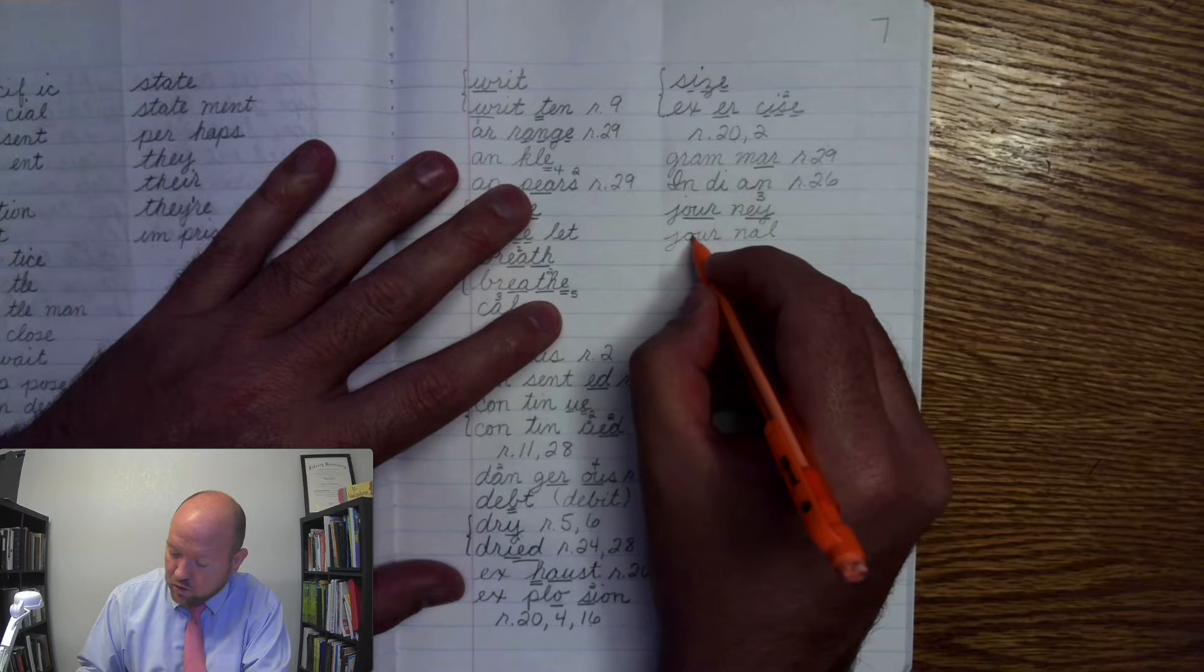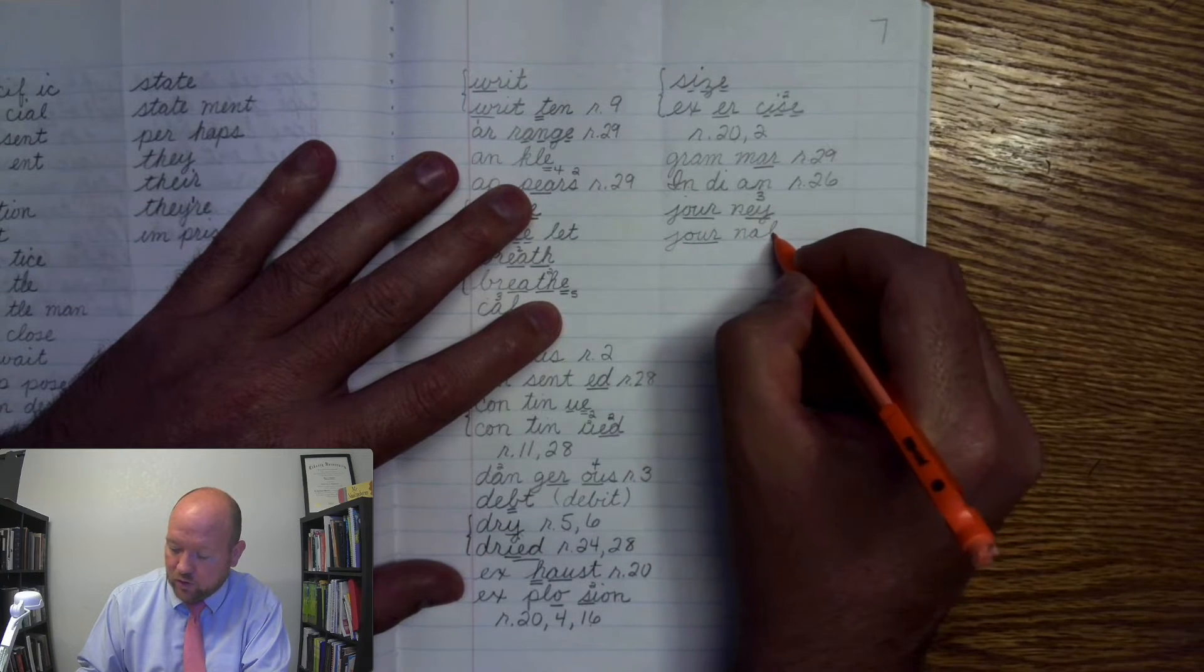All right? Markings. J, ur-once. N-A-L. Journal.